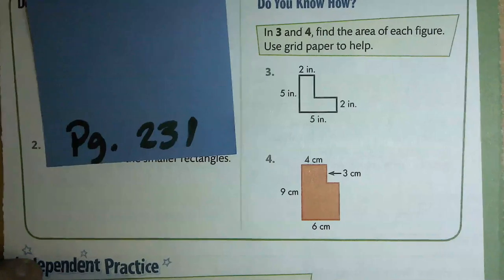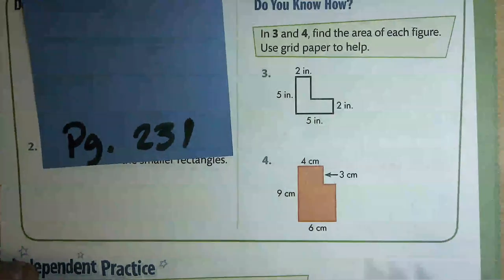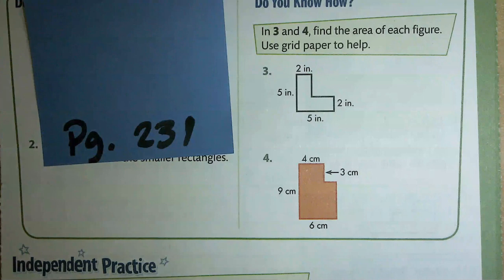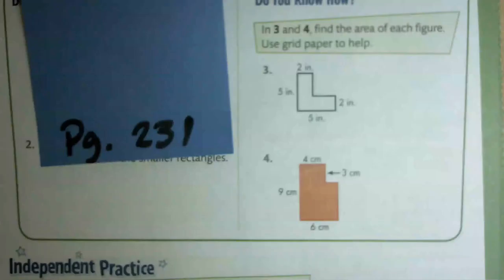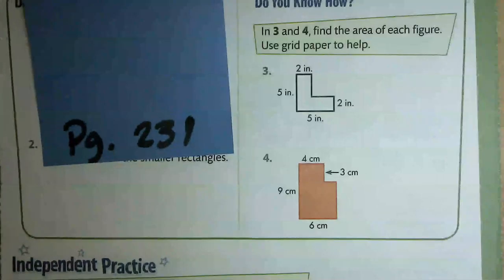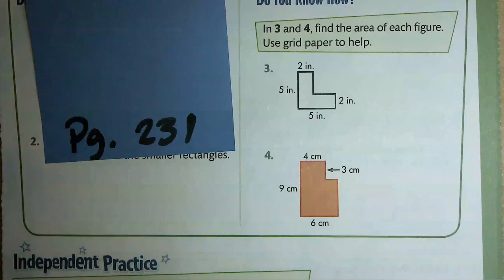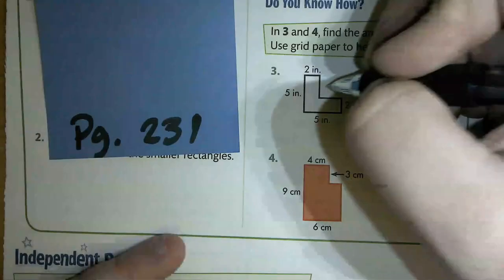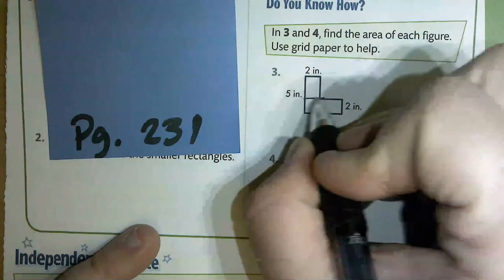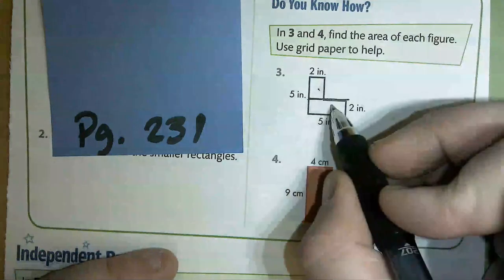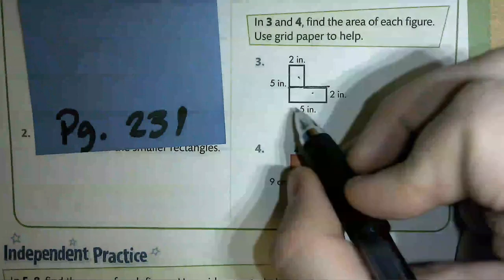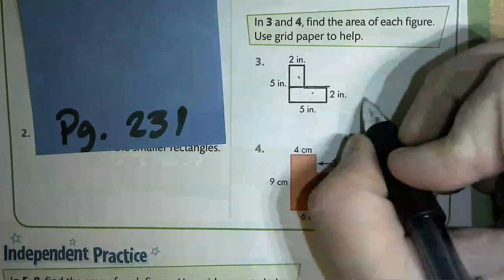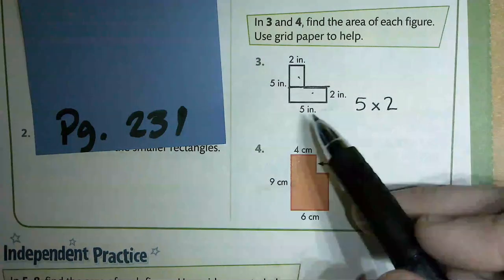On page 231, let's look at number 3. Please make sure you're writing down what I'm writing — I'm using a pen so it stands out, but use a pencil and follow along. You can use grid paper or just break the shape into smaller rectangles. This one looks similar to the first page but rotated. I'll draw a line across here, giving me rectangle A and rectangle B. Rectangle B is already set up: five across and two up, so five times two.